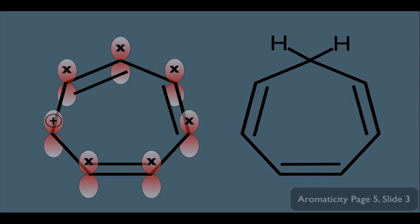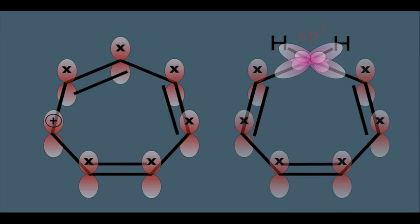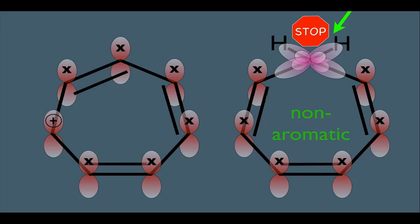Now look at this contrasting example. Notice this carbon at the top — if you determine its hybridization, you would get sp3 hybridized. Every sp3 hybridized carbon has four sp3 orbitals making all four bonds, which means this carbon doesn't have an unhybridized p orbital. This prevents the electrons from circulating around the ring — this electron simply can't move to an empty p orbital because there is no p orbital there to accept it. So this molecule has an interrupted pi electron cloud, which is why it is non-aromatic.